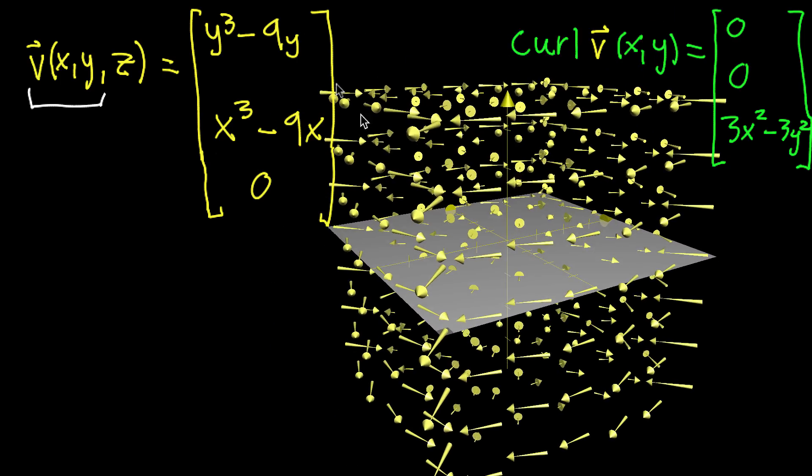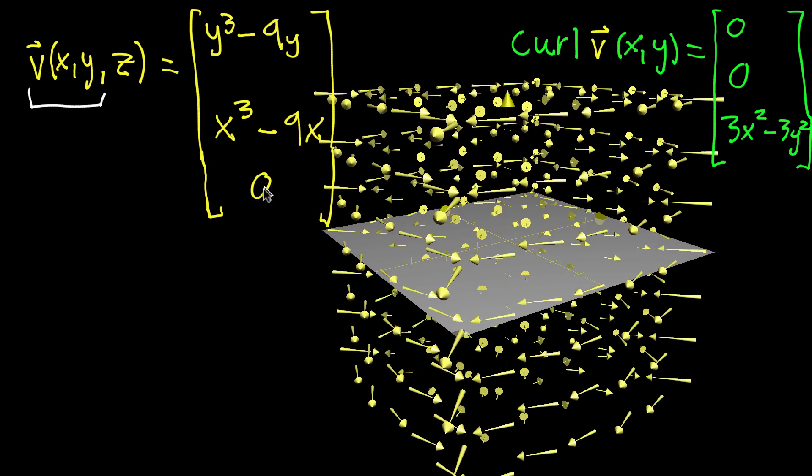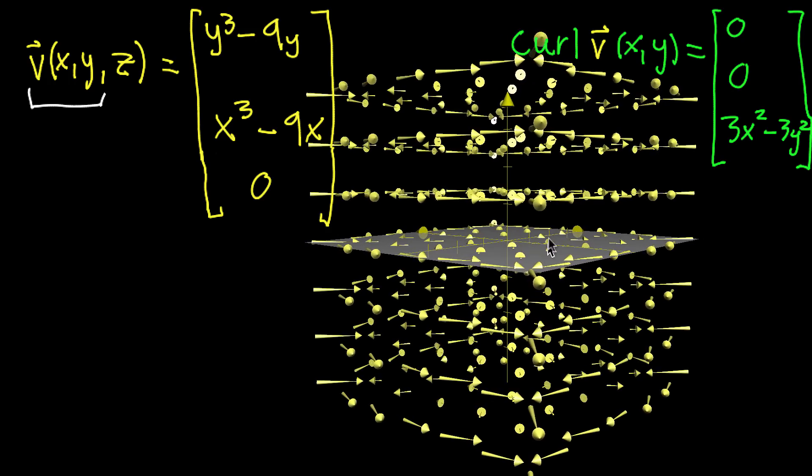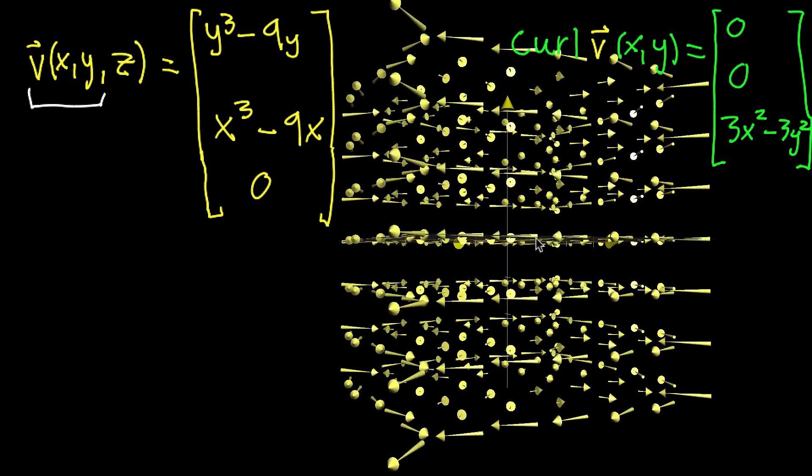And the fact that this output has a z component, but it just happens to be zero, is what corresponds to the fact that it's very flat looking. None of them point up or down in the z direction, they're all purely x and y.